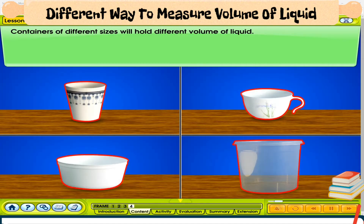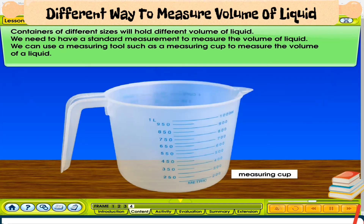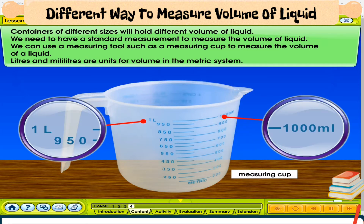Containers of different sizes will hold different volumes of liquid. We need to have a standard measurement to measure the volume of liquid. We can use a measuring tool such as a measuring cup. Liters and milliliters are units for volume in the metric system.